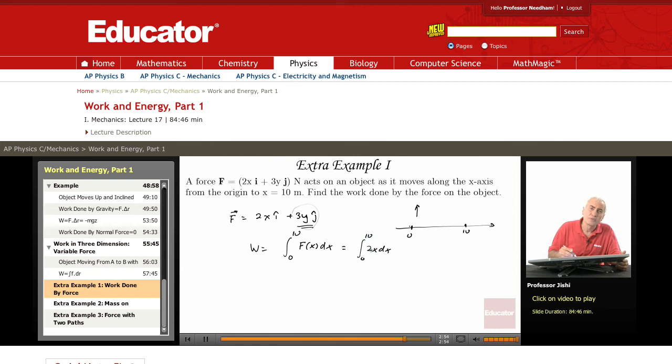Now, what is the integral of 2x dx? What is a function whose derivative is 2x? It's x squared. So that's x squared from 0 to 10. Which is 100 minus 0. So 100 joules. So the work done is 100 joules.